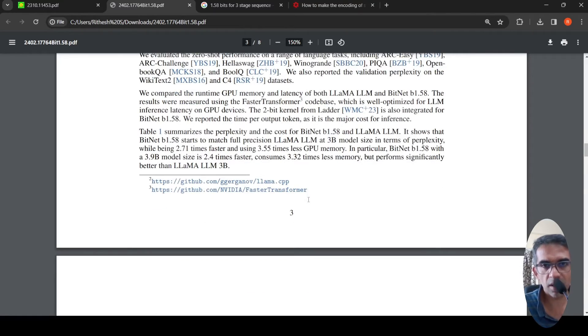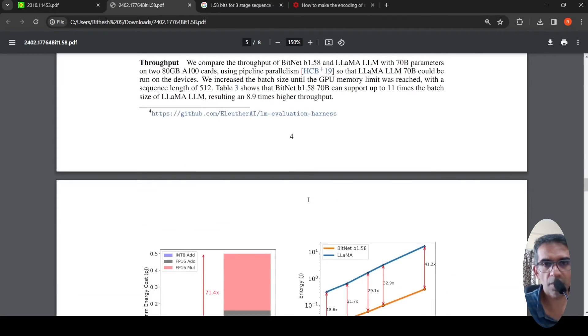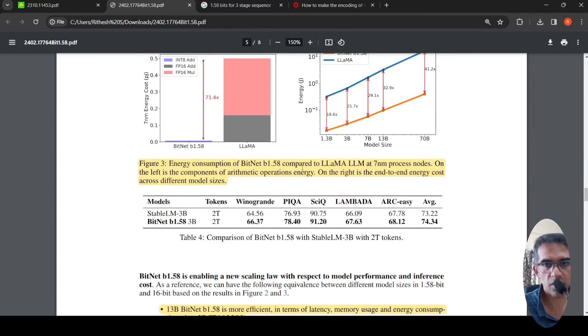And if you look at the results over here, what they are saying is that energy consumption of this particular model when compared to a LLM. Most of LLM's operations are floating point 16 addition multiplication, whereas this just uses int 8 addition. So this is the kind of comparison. So it requires 71.4x lesser energy.